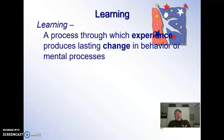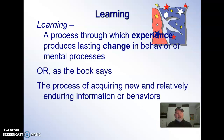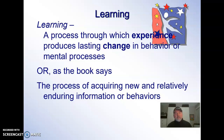What is learning? It's a process through which experience produces a lasting change in behavior or mental processes. Experience produces a change. The book says: the process of acquiring new and relatively enduring information or behaviors. I prefer the first definition — experience produces a change. So then the question is: did the computer have an experience and did that experience produce change? Did the worm have experiences which produced change?